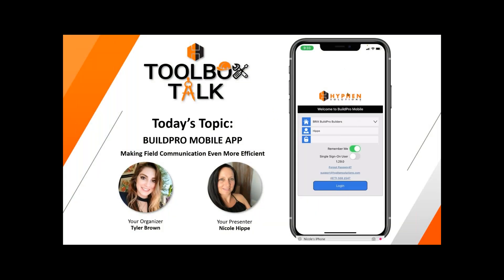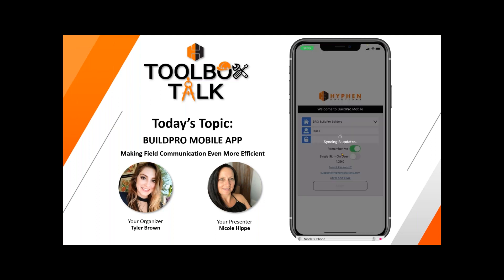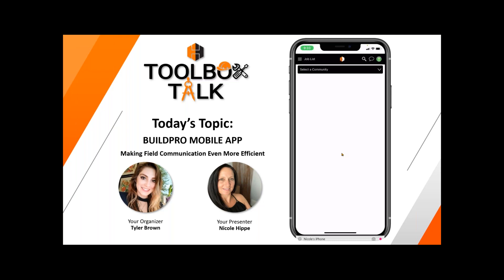So our mobile app here — first of all, we have to log into the BuildPro app. I'm going to log into the app right now and sync this information. I actually have it set up to send some notifications showing errors, just so you can see what we have to do if you do get any errors when you're using the app.